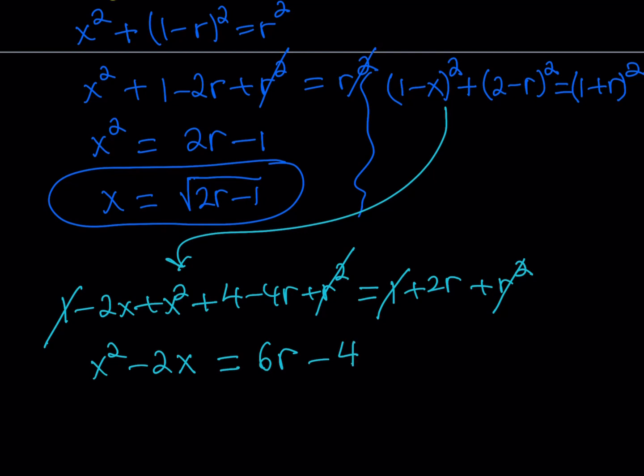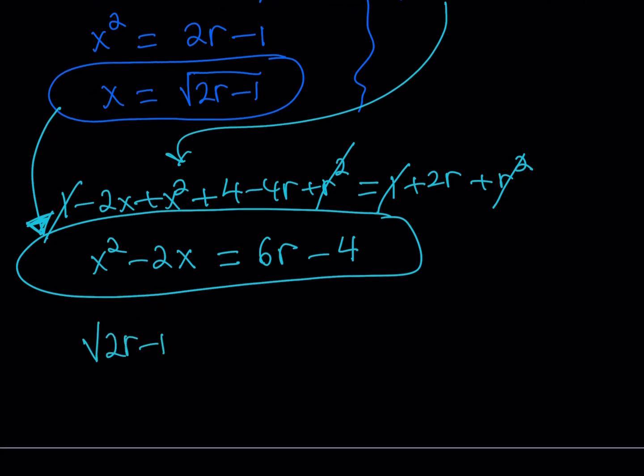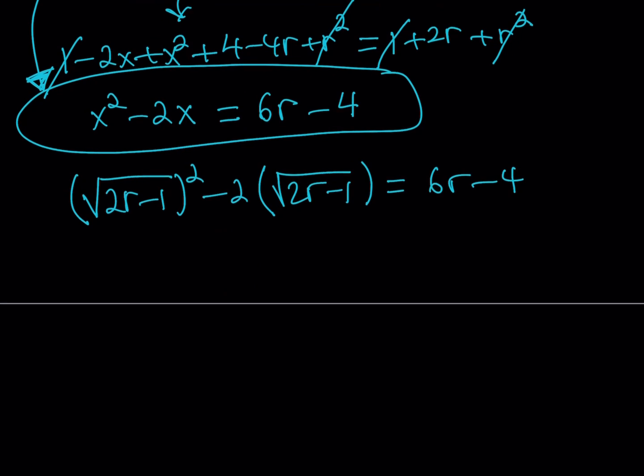Now, I did get another equation like this one, but this one doesn't have the x by itself. It's just x squared minus 2x. But that's okay, because our first equation is good enough. So we can substitute the square root of 2r minus 1 for x. So that's going to give us the square root of 2r minus 1 squared minus 2 times the square root of 2r minus 1 equals 6r minus 4. Beautiful. Let's go out and expand this, simplify this as much as we can, and then solve for r.